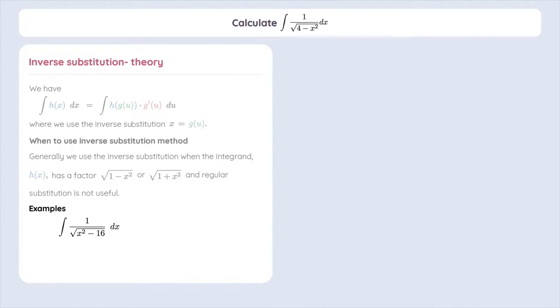For example, 1 divided by square root of x squared minus 16 is a pretty good candidate for this rule, as is 1 divided by square root of x squared plus 25.